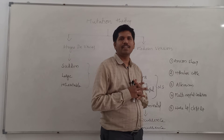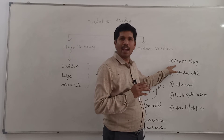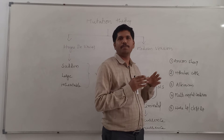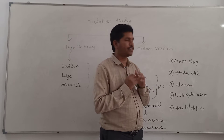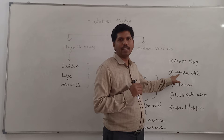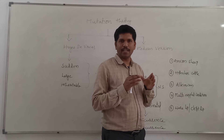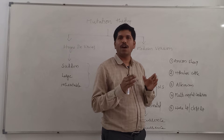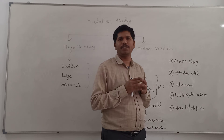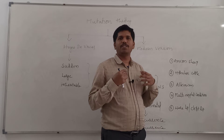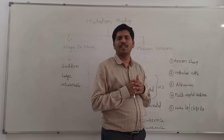In your exam, mention some examples for mutations. One is Ancon sheep — sheep with short and bowed legs. Another example is hornless cattle. Then there is albinism, a condition characterized by absence of pigment in the skin. In some individuals you can see pure white color skin.